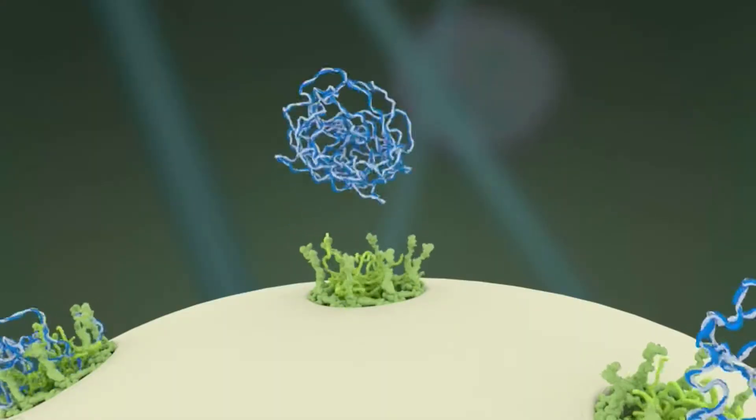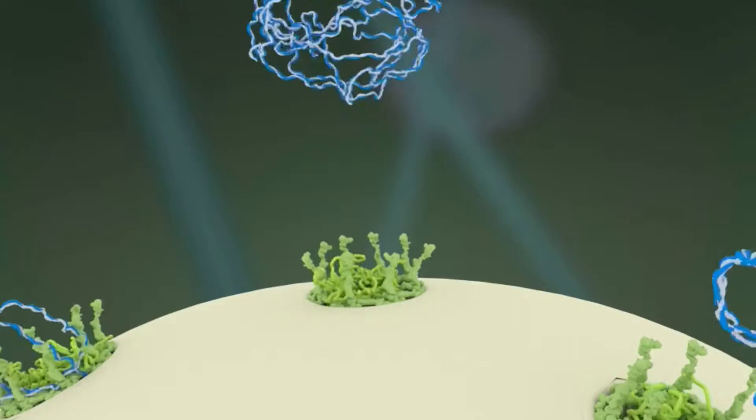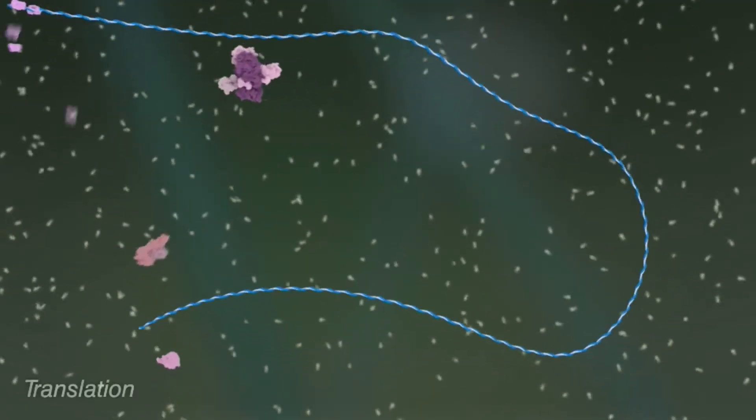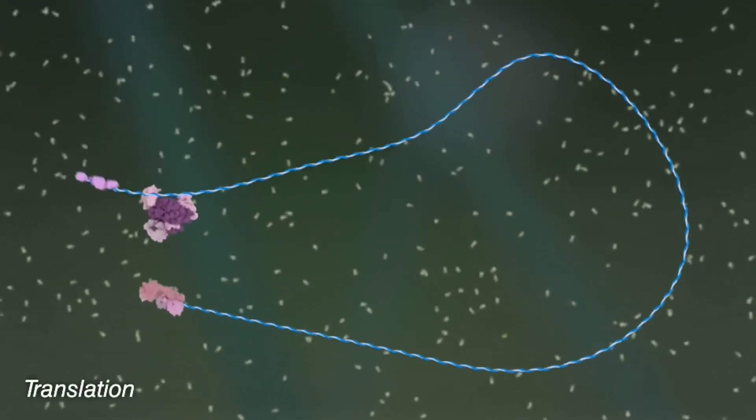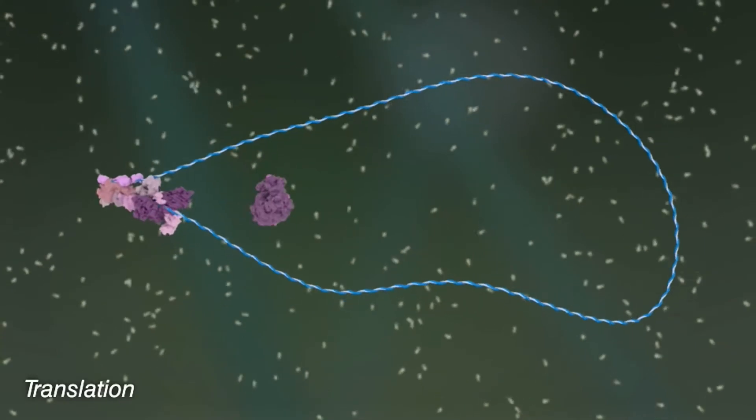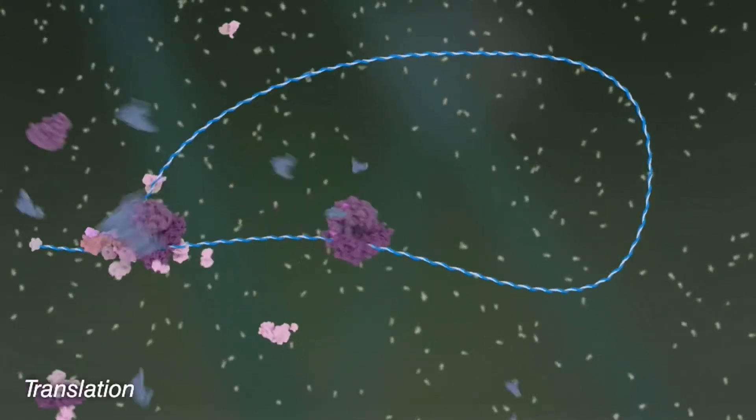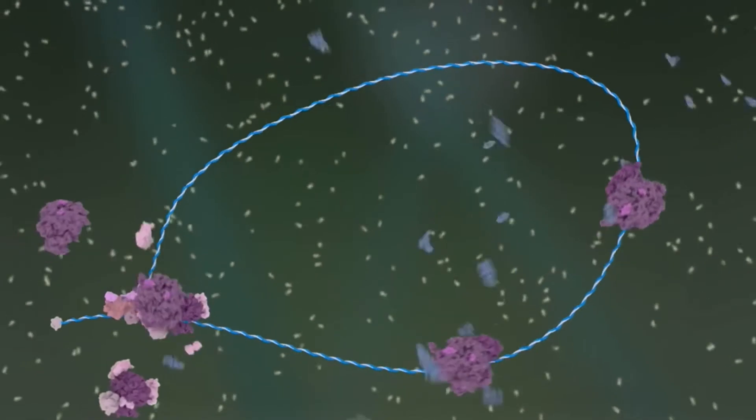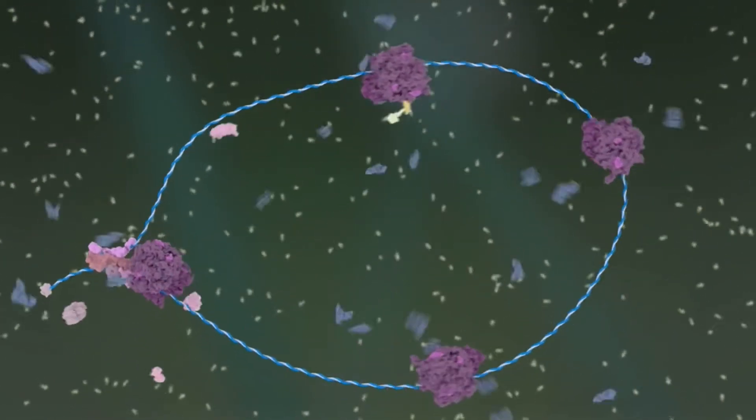Once outside the nucleus, different RNAs have different fates. Some are made into proteins using cellular machinery called ribosomes. Ribosomes read the RNA and produce viral proteins, in this case, the viral protein GAG, shown in yellow and orange.